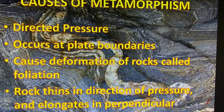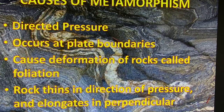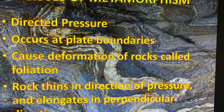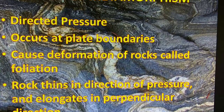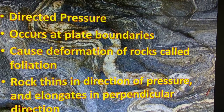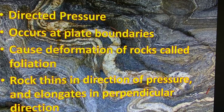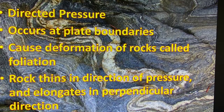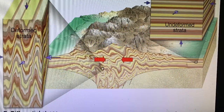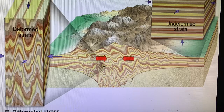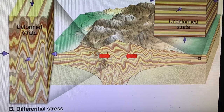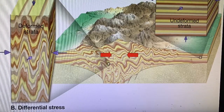The second type is directed pressure, which usually happens at plate boundaries. It goes in a specific direction. Think of a toothpaste tube: when you squeeze the sides, the tube thins in the direction you're squeezing and the toothpaste elongates perpendicular to that. The same happens to rock — it thins in the direction pressure is applied and stretches out perpendicular. This deformation of rocks is called foliation.